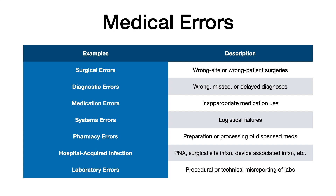Hospital acquired infections are obviously a huge concern for hospitals and do show up on exams. Laboratory errors occur when blood is drawn, read incorrectly, and the laboratory data is reported incorrectly — that is also a medical error. So these are just some of the types of examples you could see on your exam.